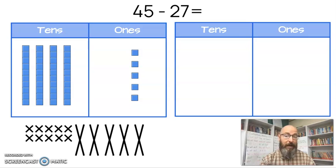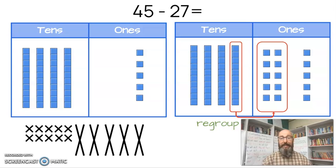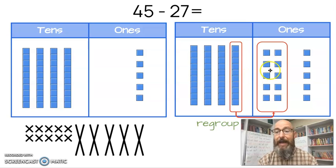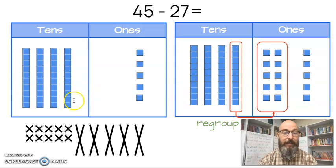So we're going to build our 45. Again, do I have 45 here? Let's count. 10, 20, 30, 40, 41, 42, 43, 44, 45. And then I'm going to regroup. So I'm going to take 10 from my 40s and I'm going to move it over here to the ones. So my 10 here is gone and I have 10 ones over here. Now I can subtract.